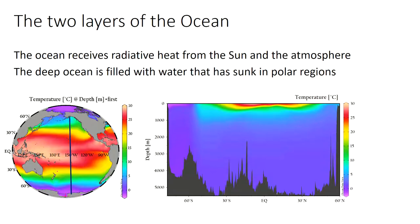This leads to an imbalance: the tropics get heated quite a lot from direct heating from the sun, but also the atmosphere radiates heat back down to the surface, which leads to warm water at the surface of the ocean in the tropics. In the polar regions the water is a lot colder because the atmosphere is a lot colder.